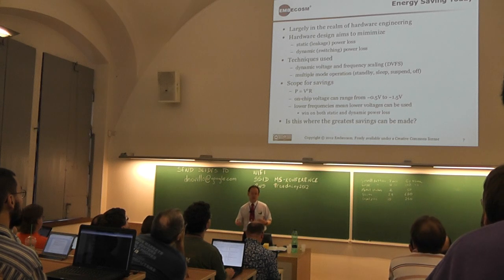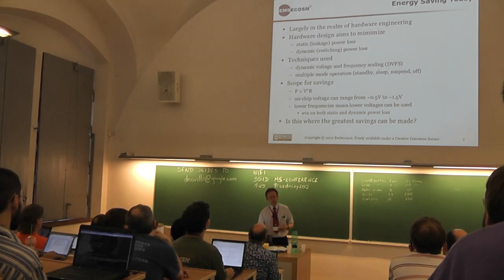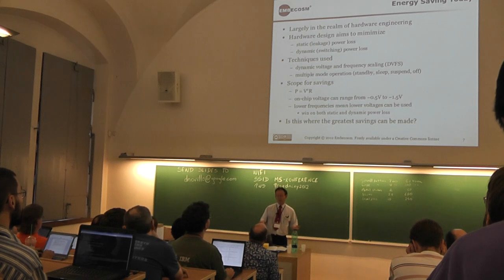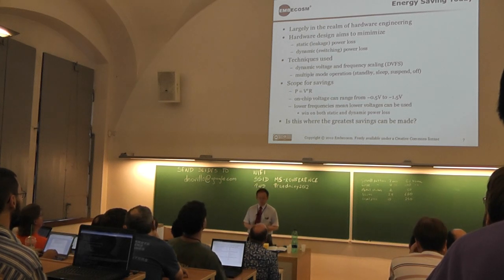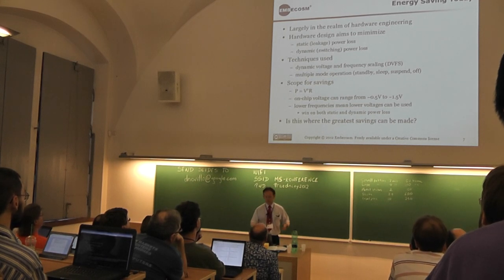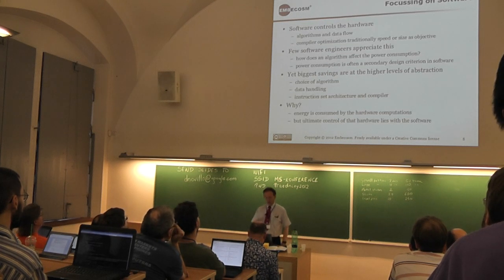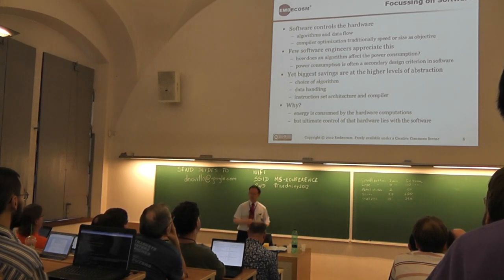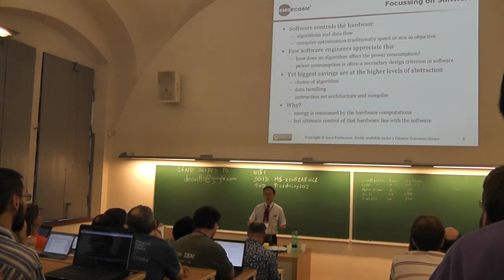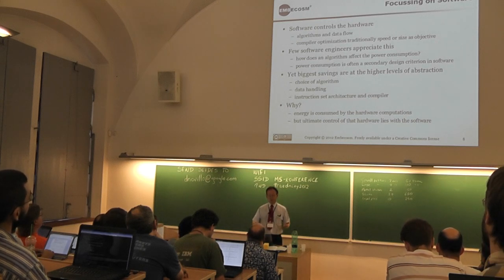Where are we with energy today? The things that go on in hardware are quite extraordinary. Steps taken to minimize power loss include multiple clock domains, dynamic voltage and frequency scaling, and multiple mode operation — all based on the simple formula P = V²R. So if you can drop the voltage, you can save a lot of power. Hardware engineers have done their bit, but the question is: what about the software guys? We have a -O3 switch to go as fast as possible and a -Os switch for smallest size, but there isn't a -Op switch to go as low power as possible.